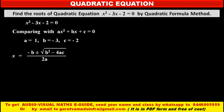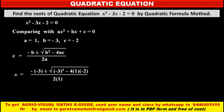Now in this formula we substitute: x is equal to minus of minus 3, plus or minus under square root of b squared, that is minus 3 squared, minus 4ac, that is 4 into 1 into minus 2. So we get 3 plus or minus under square root of 9 plus 8, which is 17, upon denominator 2.